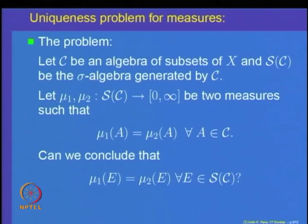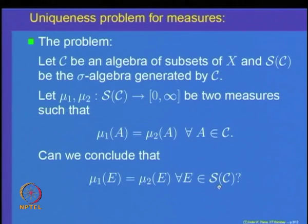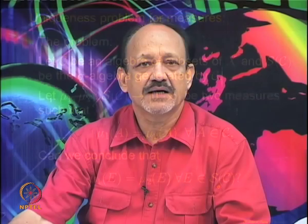The question is: can we conclude that mu1(E) = mu2(E) for every element in the sigma algebra generated by C? This is a general uniqueness problem which plays a role later on when we extend measures to general settings. To answer this question, let us make some definitions. First of all, this is not true in general — we have to put some conditions on the measures.